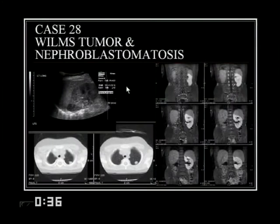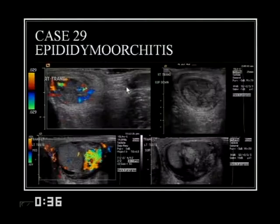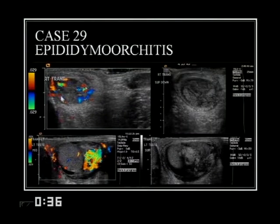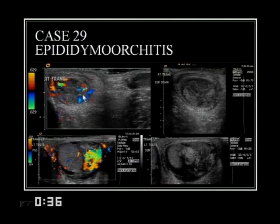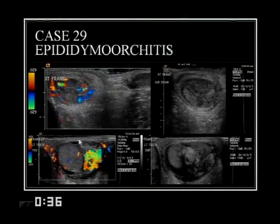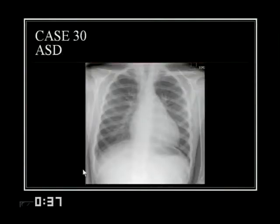The duplicate case earns extra points. Epididymitis orchitis is shown with abnormal Doppler flow in the epididymis, normal testicular flow, and increased capsular flow on the other side representing a secondary orchitis reaction. Another child has a large heart with big central blood vessels consistent with an atrial septal defect.